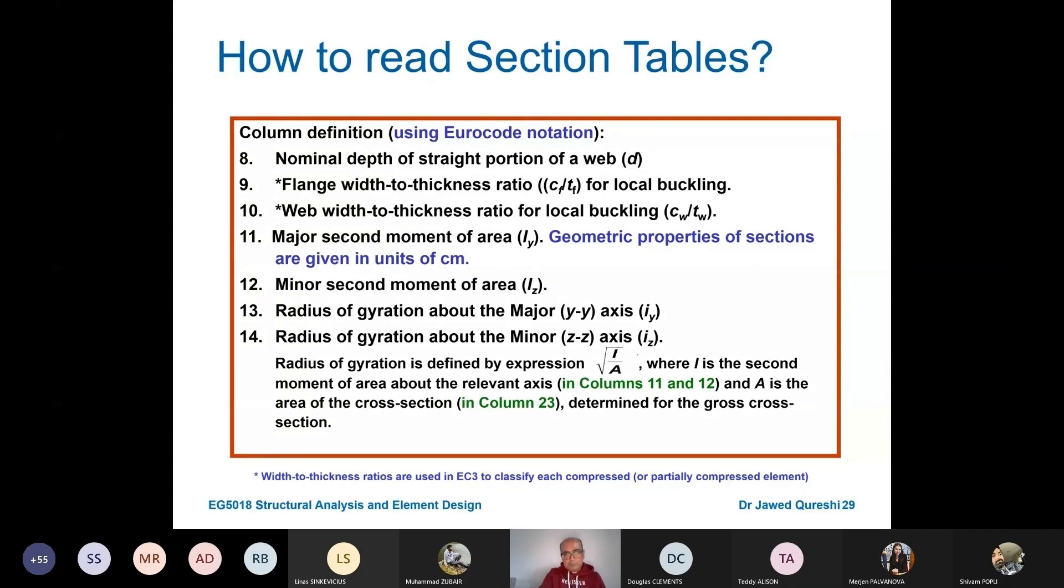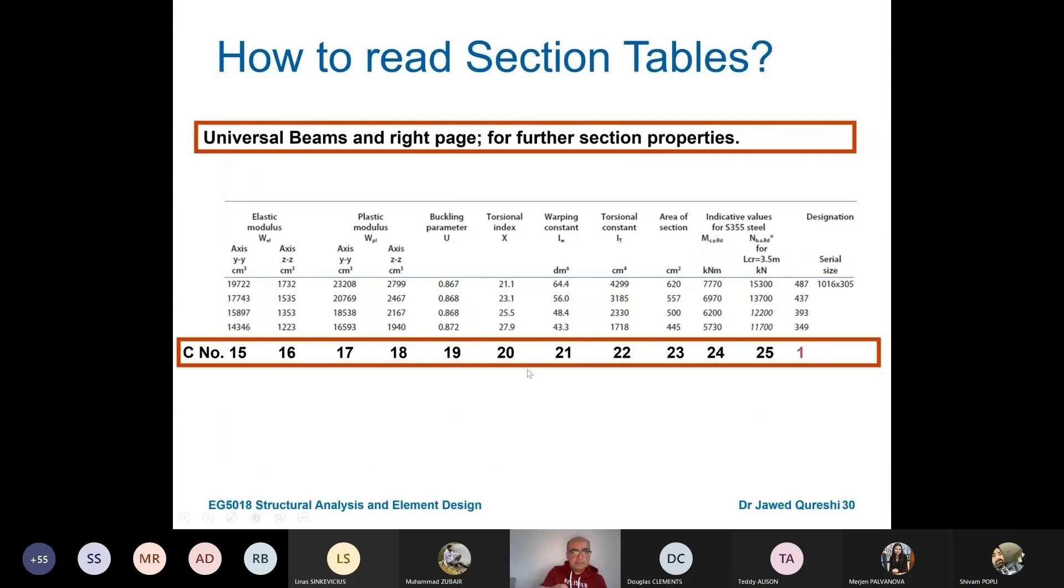You have radius of gyration. The formula for radius of gyration is I over A under root. We will use this radius of gyration when we design columns.